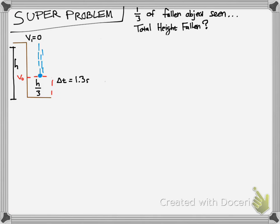Now this is a super tough problem. If you really think you got it down, I would try this, pause it, do the best you can to figure it out. You only have seen the last third of the total height from this object has fallen. So if I drop this object, you weren't looking when it dropped, but then you turned and looked and you just saw the last third of the fall. What was the total height the object had fallen? You're given the time that you saw was 1.3 seconds and it was initially dropped at velocity zero. Here's a hint: you're going to need to use the quadratic formula.